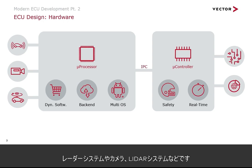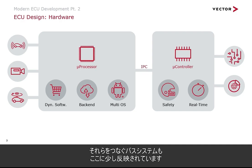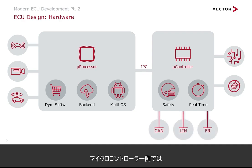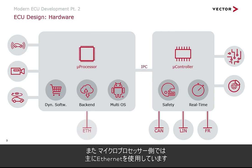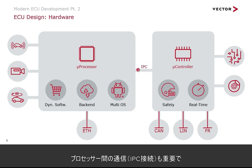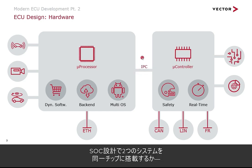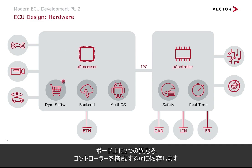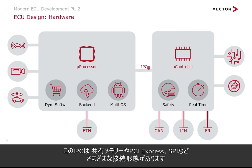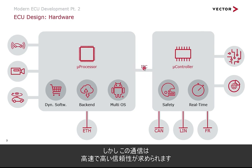The bus systems connected also reflect this split. On the microcontroller side you have classical bus systems like CAN, LIN, and FlexRay, while on the microprocessor side we mainly use Ethernet. Also important is the IPC — inter-processor communication — between the two. Depending on whether both are on the same chip in a SoC design or on two separate controllers on the board, this IPC may use shared memory, PCI Express, or SPI. This communication link needs to be fast and reliable.